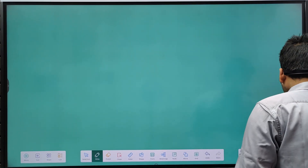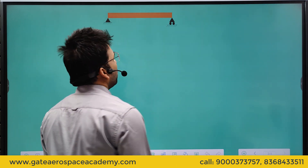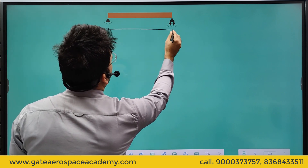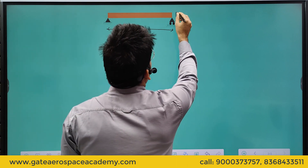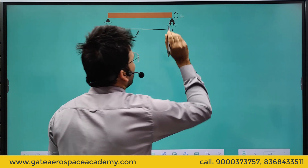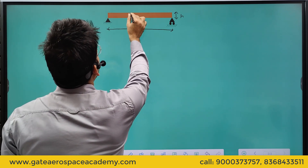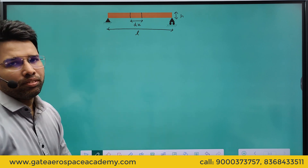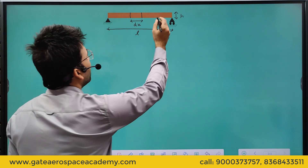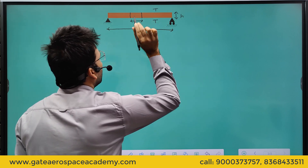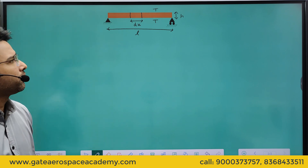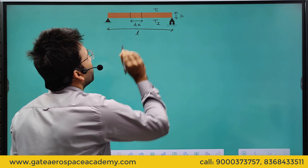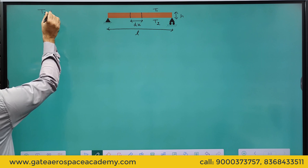Let's say we have a beam which is simply supported, with length L and height H. We take one small element of length dx. Initially it is kept at uniform temperature T, so nothing was happening. Now let's say its temperature changes to T1 at the top and T2 at the bottom, where T2 is greater than T1.